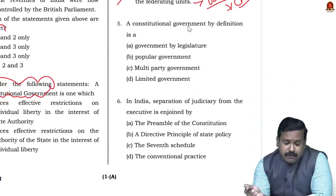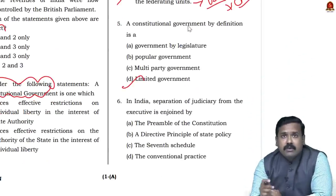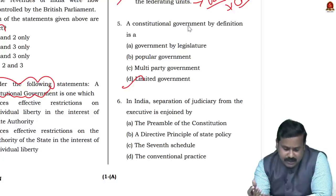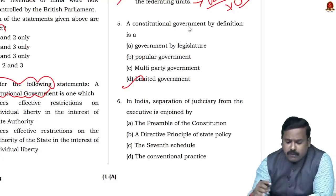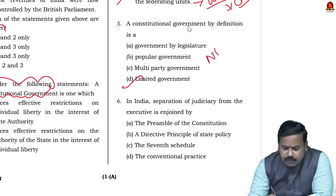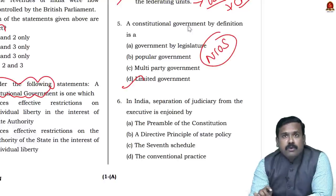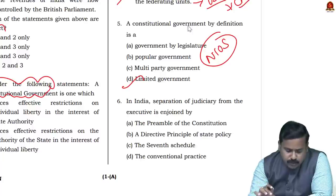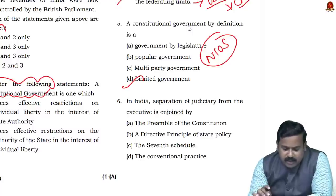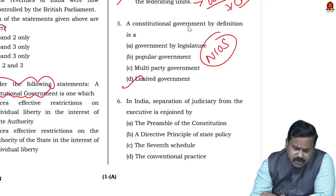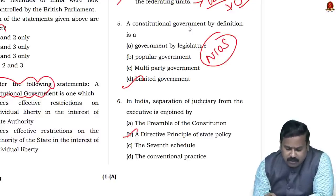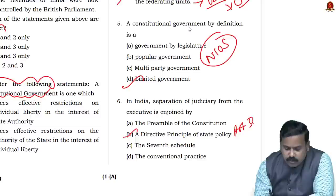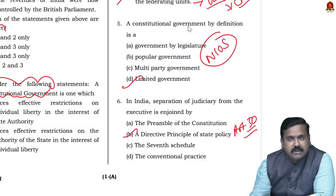Question five: A constitutional government is by definition a limited government — this is a frequently asked, straightforward question. Questions can be sourced from NIOS (National Institute of Open School) textbooks. Question six: In India, separation of judiciary from the executive is enjoined by the Directive Principles of State Policy, Article 50 — a very straightforward, easy question.